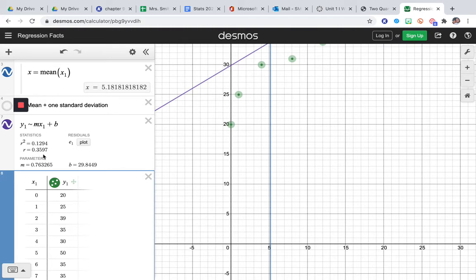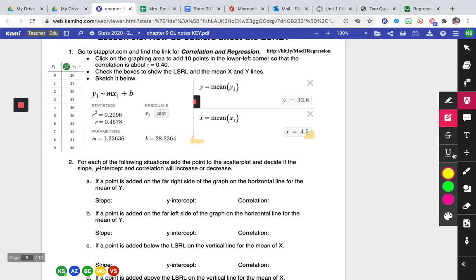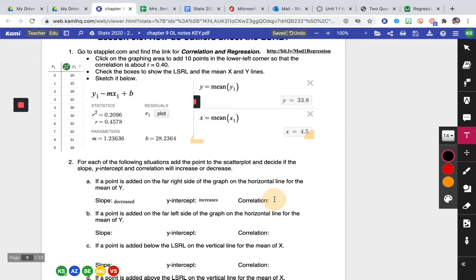So if I come up here, I want to compare what's happening to my correlation coefficient, my slope, and my y-intercept. So I see my new correlation coefficient is 0.359, which is smaller than the original one. My slope is 0.76, so my slope has decreased from 1.24. And my y-intercept is 29.84, so that actually increased my y-intercept. So let's come back here and let's write that in. So the slope decreased, the y-intercept increases, and the correlation decreased.